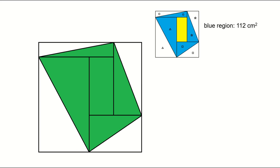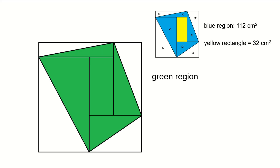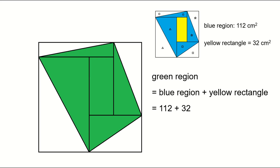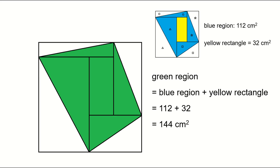The area of the yellow rectangle is 32 square centimeters. The area of the green region is the area of the blue region plus the yellow rectangle: equals 112 plus 32, equals 144 square centimeters. This is the answer to this problem.